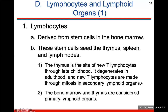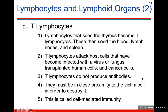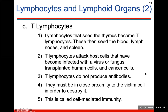T lymphocytes are lymphocytes in the thymus that become T lymphocytes and then go on to be in your blood, lymph nodes, and spleen. T lymphocytes will attack host cells that have become infected with a virus or fungus, transplanted human cells, and cancer cells. T lymphocytes do not produce antibodies; they must be in close proximity to the victim cell in order to destroy it, and this is called cell-mediated immunity.